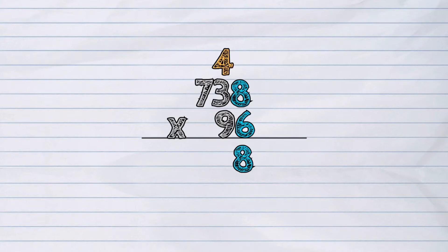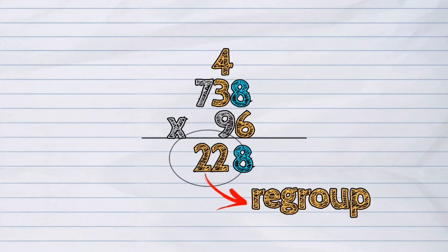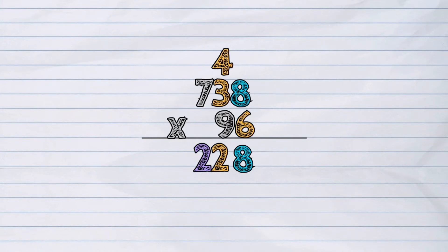Then, multiply the digit in the lower ones place column by the digit in the top tens column. 6 times 3 is 18. This answer is added to the 4 above the top tens place column to give an answer of 22. Again, we will regroup. 2 tens will be carried over to the hundreds place column, and 2 ones will be placed in the tens column.